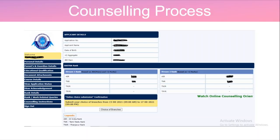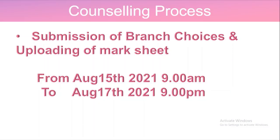For all students there will be two ranks — one in Stream One and another in Stream Two. In the counseling process, you can submit your branch choices. Also, if you find any incorrect marks in 12th grade or JEE Main scores, this is the chance to update them as well, which I will explain in the forthcoming slides.